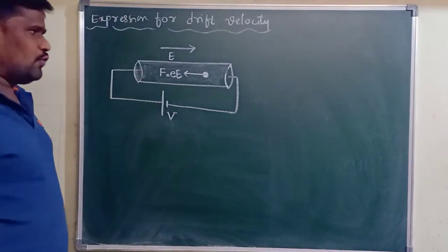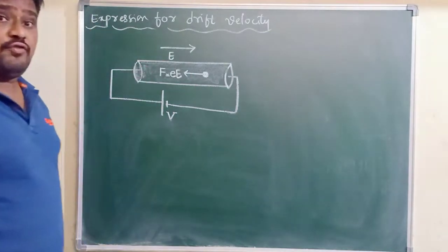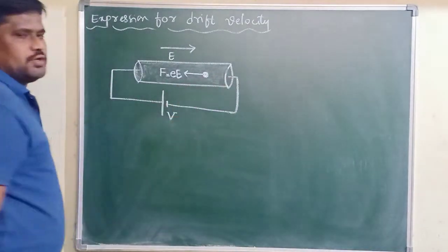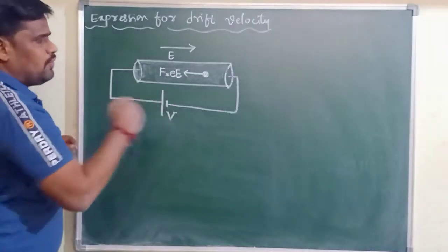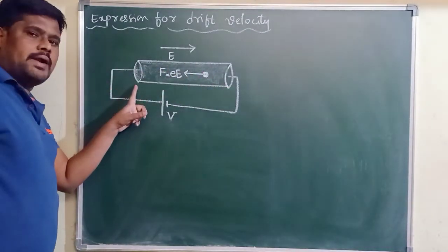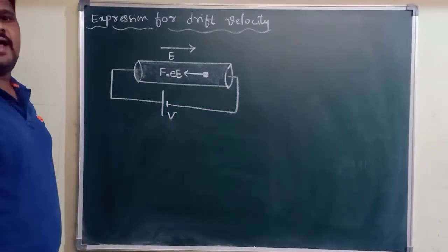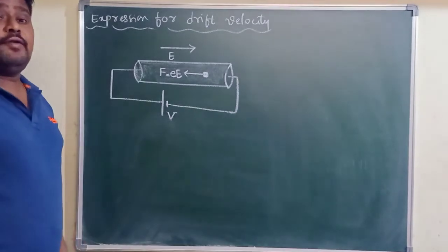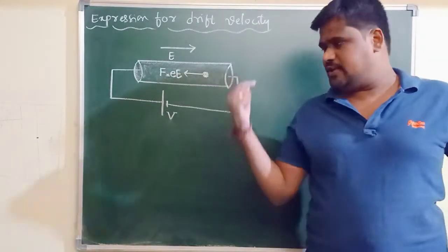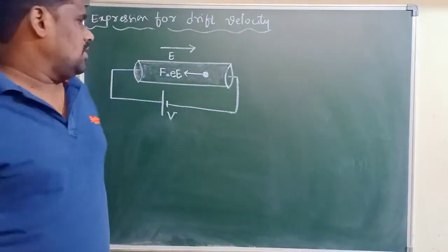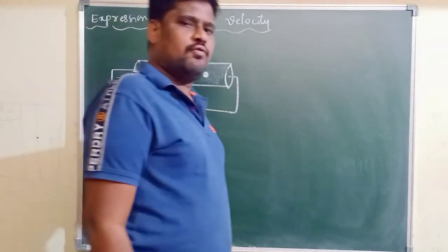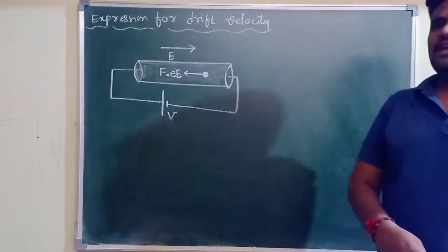With this force, all the free electrons in a conductor are drifting from one end of the conductor to another end of the conductor in the direction opposite to the electric field. That velocity we call the drift velocity of free electrons. The average velocity with which free electrons in a conductor are drifting in the direction opposite to the direction of the electric field is called drift velocity.